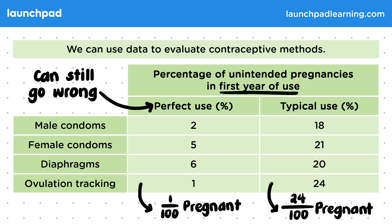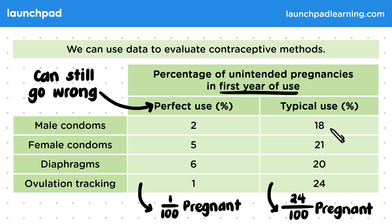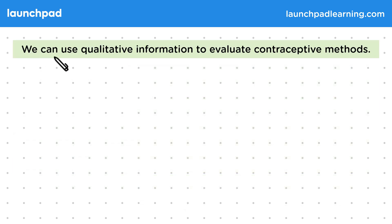From this data we can deduce that although ovulation tracking is the most effective when used perfectly, when we look at typical use male condoms are more effective. With male condom typical use there was only 18% of unintended pregnancies in the first year of use, compared to 24% for ovulation tracking. 18% is the lowest percentage in the typical use column.